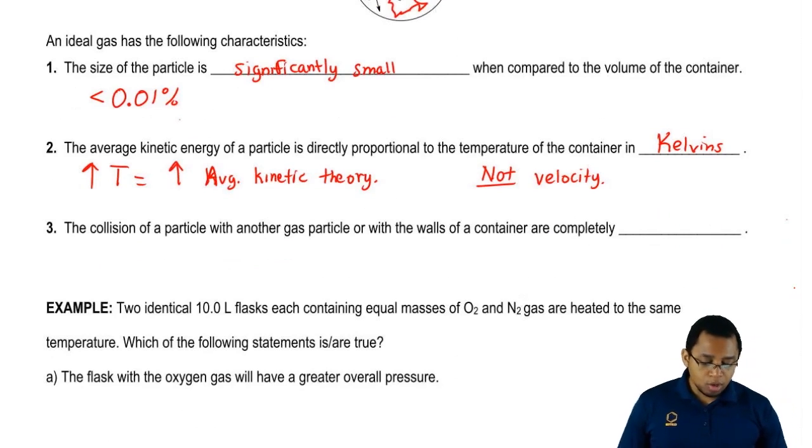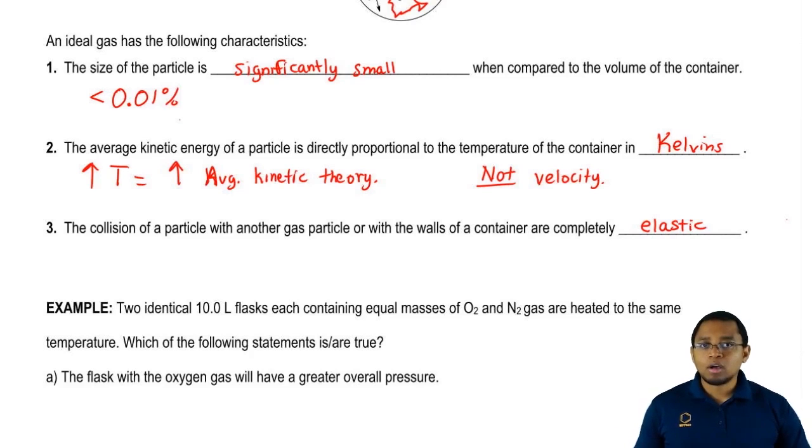Now we're going to say the collision of a particle with another gas particle or with the walls of a container are completely elastic. That means that when the gas particles are hitting one another or hitting the walls of the container, they bounce off. Kind of like ping pong balls inside of a container. They're all bouncing around, but none of them are sticking together.